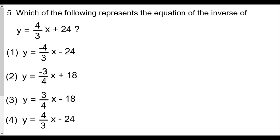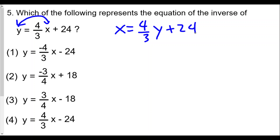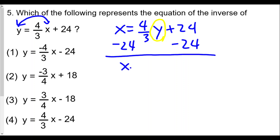Question five: which of the following represents the equation of the inverse of y equals four-thirds x plus 24? We switch the x and y values to get x equals four-thirds y plus 24. We then solve for y, so we subtract 24 from both sides to get x minus 24 equals four-thirds y.